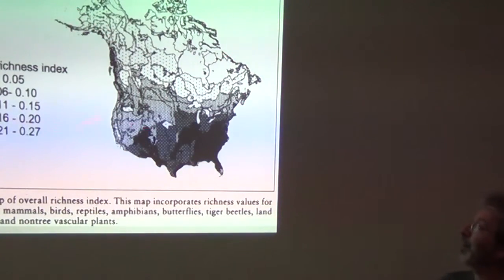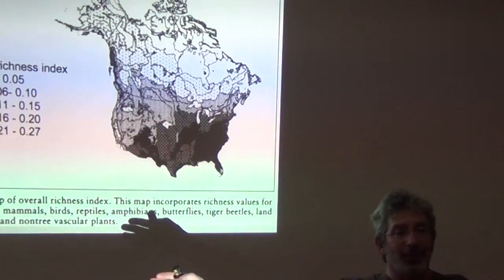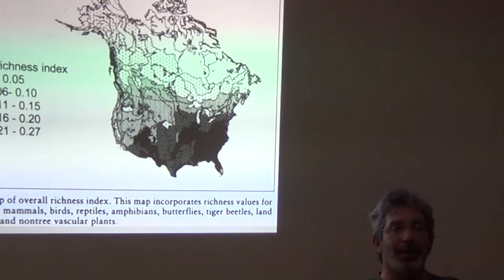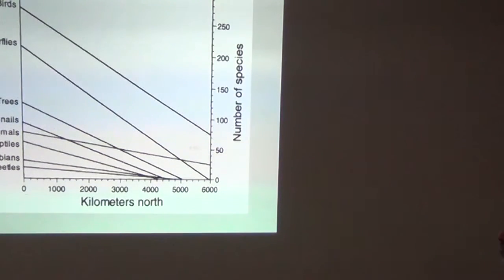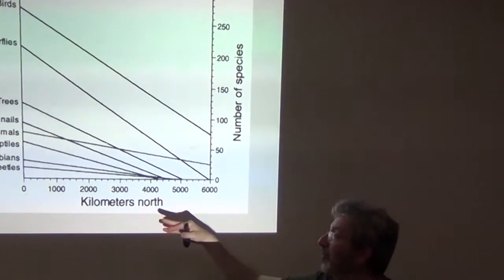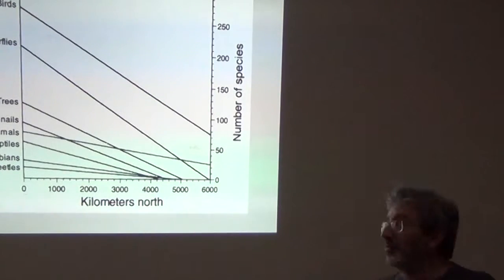But that is an overall richness pattern taking into account the variation in each of those many taxonomic groups. You can see the latitudinal species gradient as you go north of the southernmost point in the region that they were considering. You see, for every single group, the richness goes down as you go north. With butterflies, it goes down faster. With beetles, it goes down slower. But that's the general pattern.